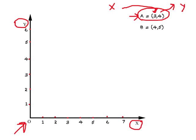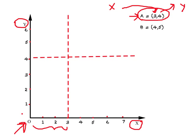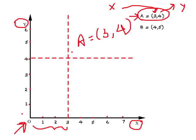So A equals (3, 4) means X is 3 and Y is 4. To plot this point, we go three steps on the X axis because X equals 3, and draw a vertical line from there. Then, since Y is 4, we go four spaces on the Y axis and draw a horizontal line. Wherever these two lines meet, you have point A at (3, 4).